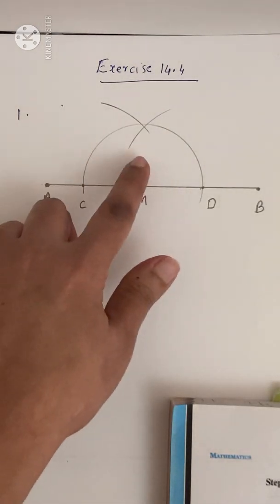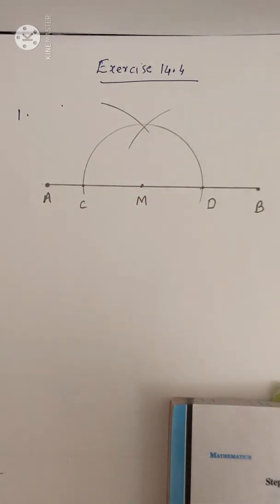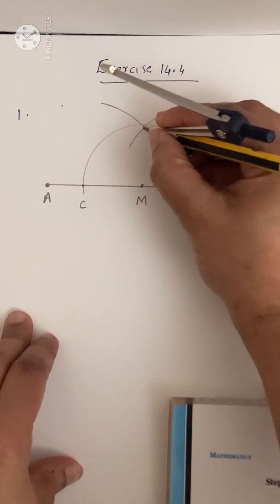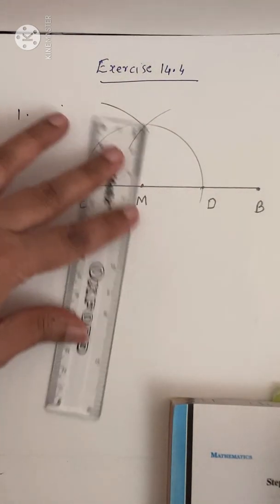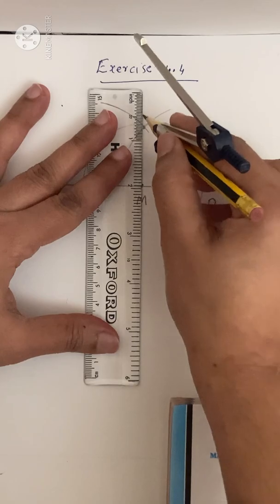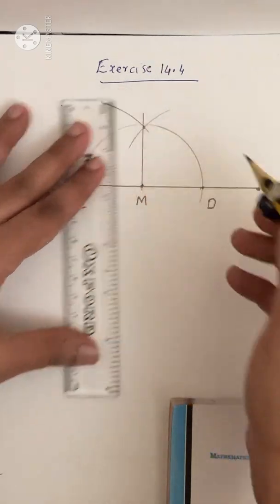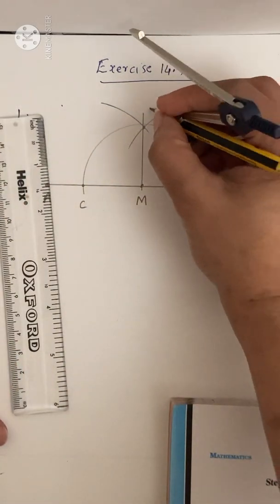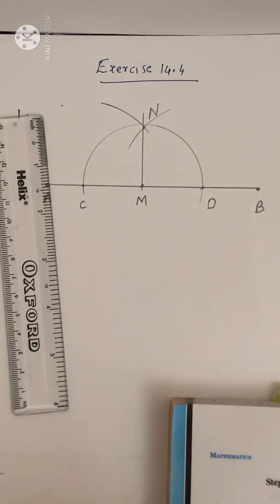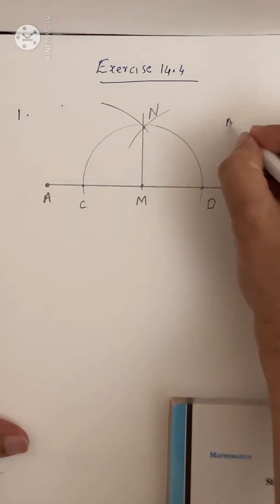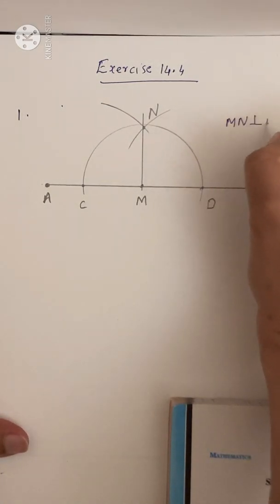With the same radius and D as center, draw another arc. You can see the two arcs intersect at a point. Join this intersecting point with M, and name it N. Therefore, MN is perpendicular to AB.